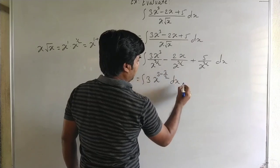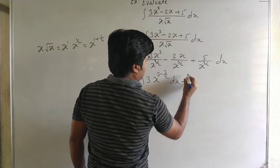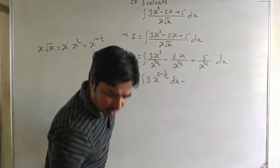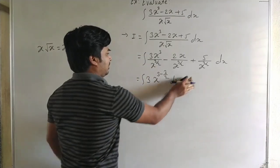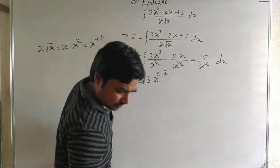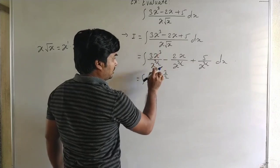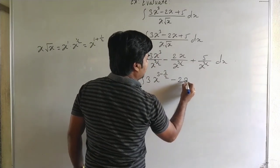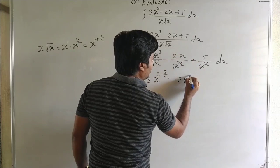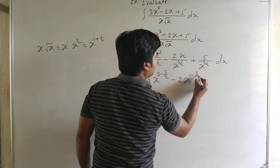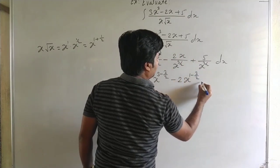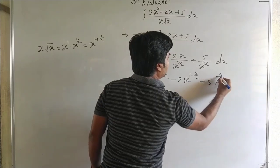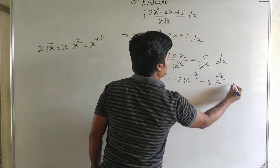Separating the integrals: minus the integral of 2 into x to the power 1 minus 3 by 2, and plus 5 into x to the power minus 3 by 2 dx.